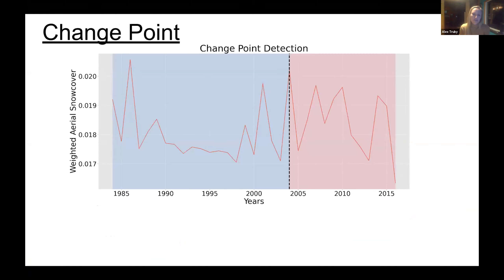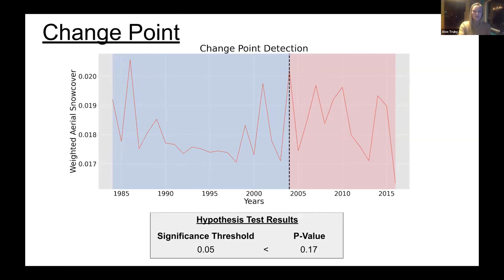I implemented a change point detection method called binary segmentation, which is essentially scanning the data set to see if there's a point in time for which the means before and after that point are different than the means of the data set as a whole. I found that yes, there is such a point, and it looks like about 2004. However, this binary segmentation test doesn't tell you whether or not that change in mean weighted aerial snow cover is significant. So I followed that up with a separate hypothesis test and found that I could not conclude there was a significant difference between the means before and after 2004, which means I can't confidently say that the snow cover for these areas is either increasing or decreasing consistently over time.